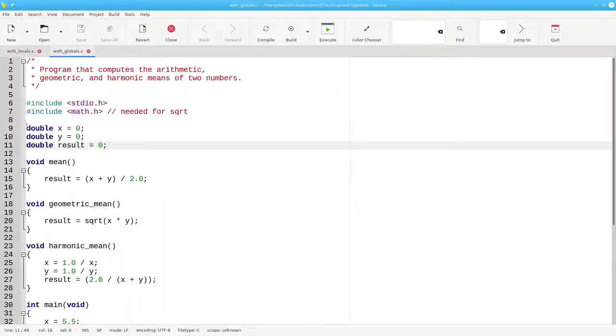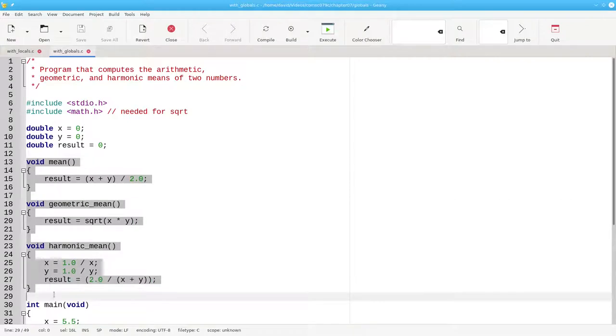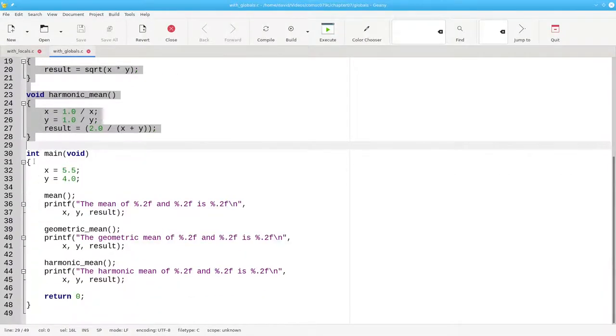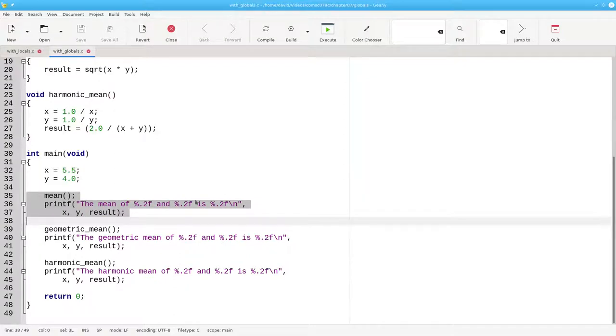Here's the code using globals. We set the globals. Here are our functions that all set the global result. And here we set the global variables, call each of the functions, and then print the numbers and the result.